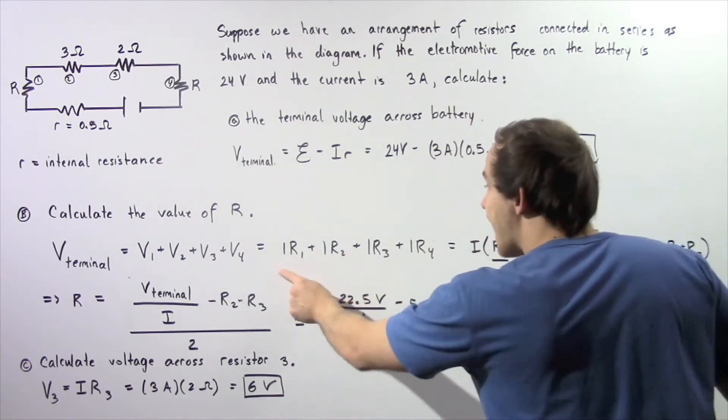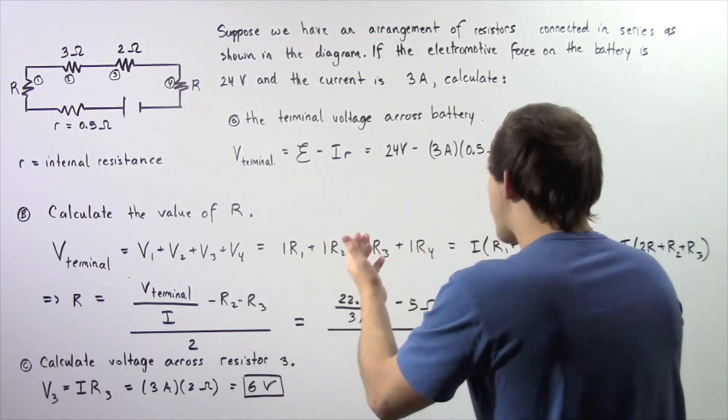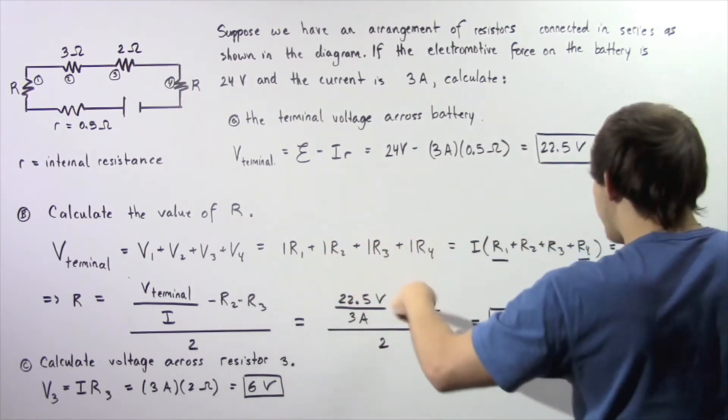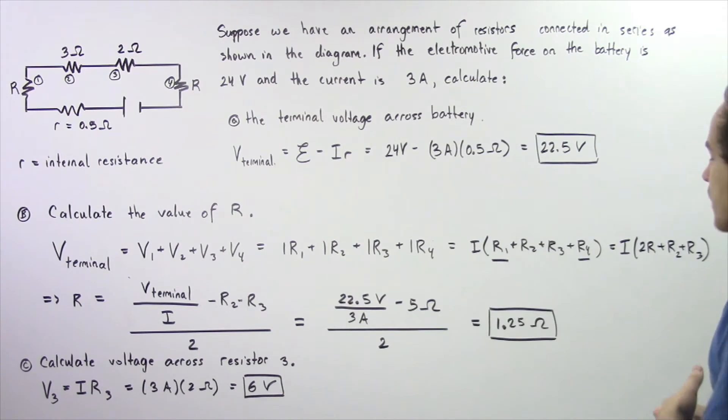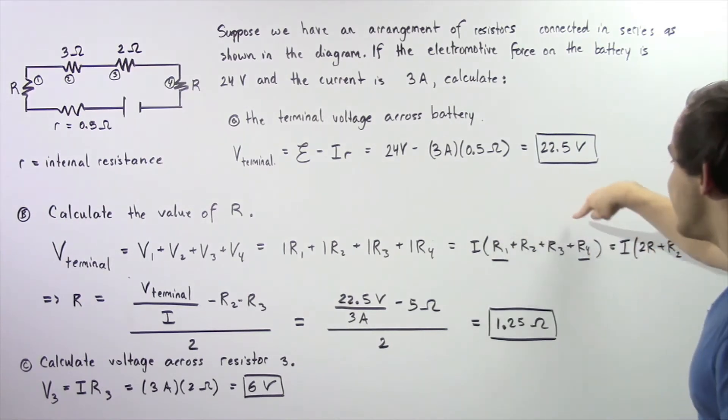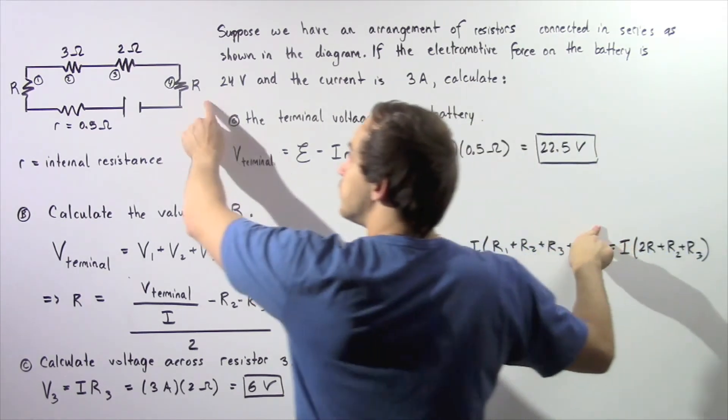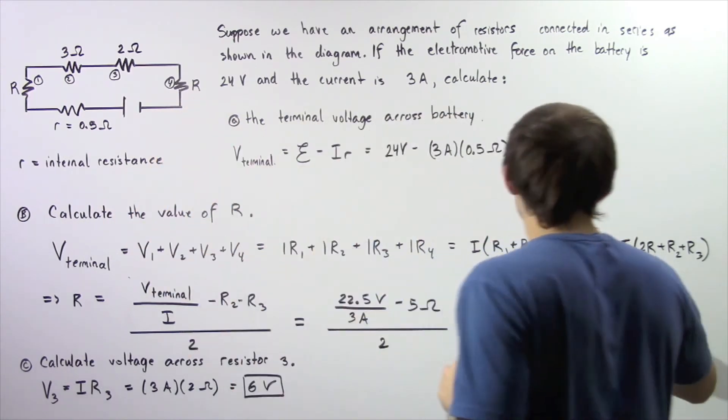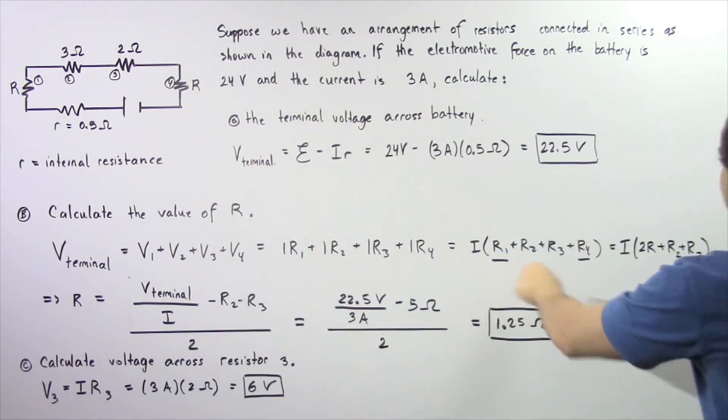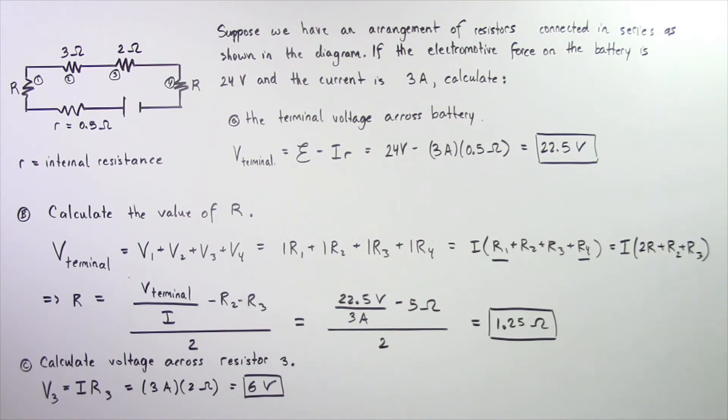So notice the I's are exactly the same. We can bring them outside of our equation and we get this result. So notice R1 and R4 are simply our uppercase R's. So these can be combined and we get I multiplied by 2R plus R2 plus R3.